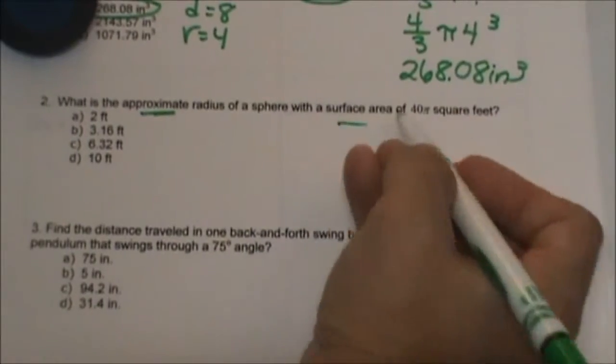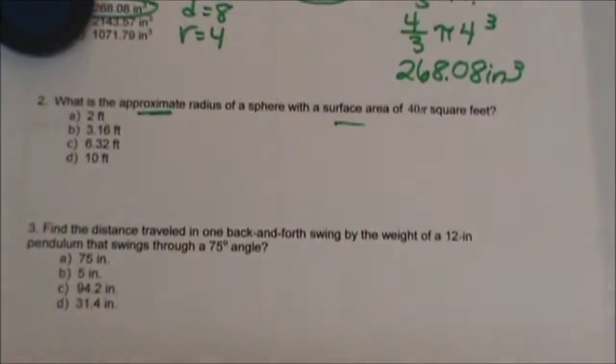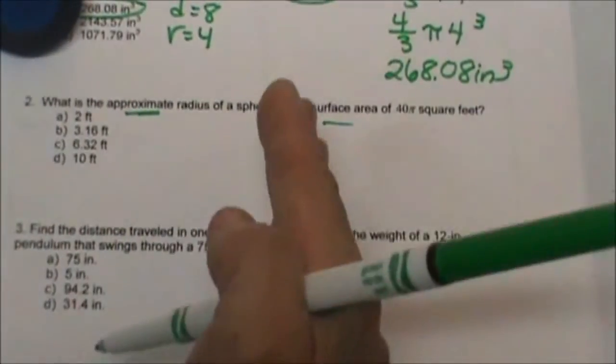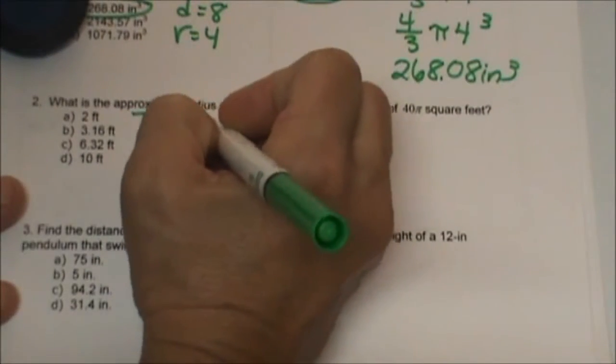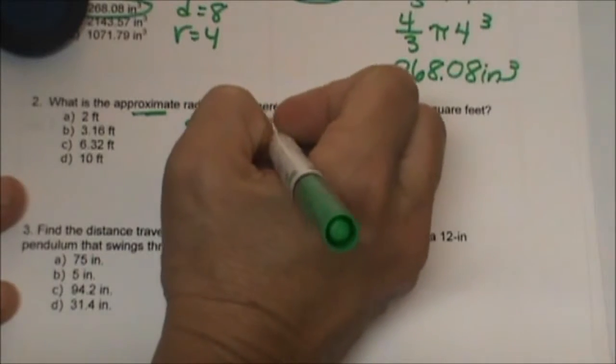They are giving us the surface area and want us to find the radius. We are going from area backwards to just the linear measurement. The surface area formula is 4πr².